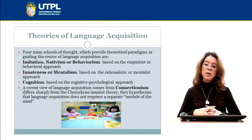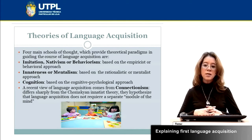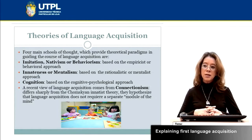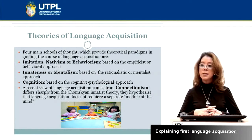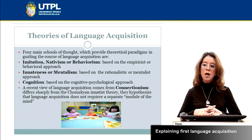Which are the theories of language acquisition? We have three main theoretical hypotheses about first language acquisition. They are: imitation, nativism or behaviorist, which is based on the empiricist behavioral approach; innateness or mentalist, which is based on the rationalist or mentalist approach; and cognition, which is based on the cognitive psychological approach.